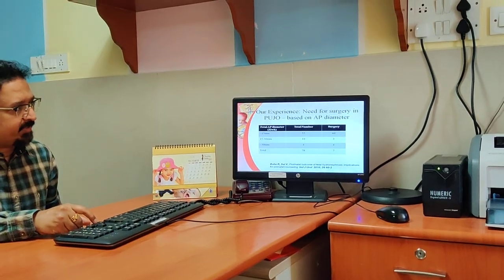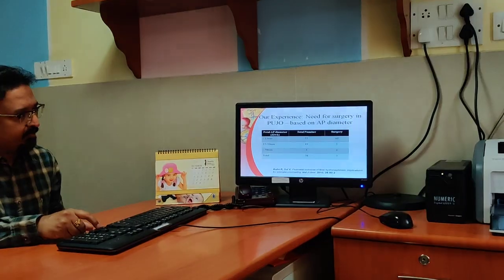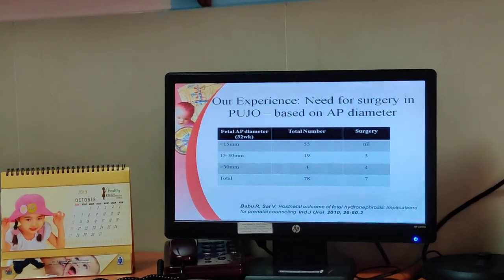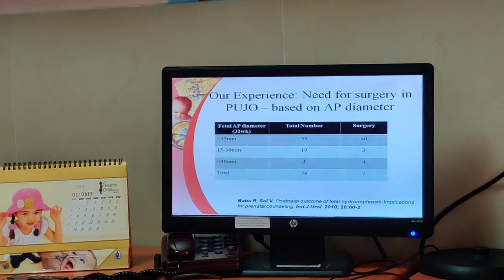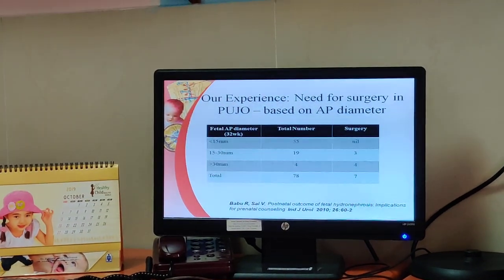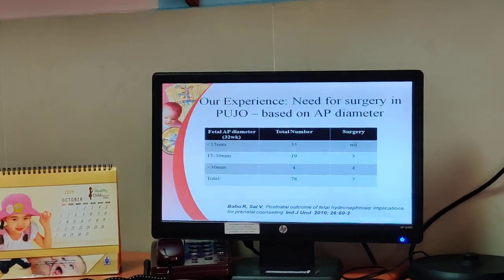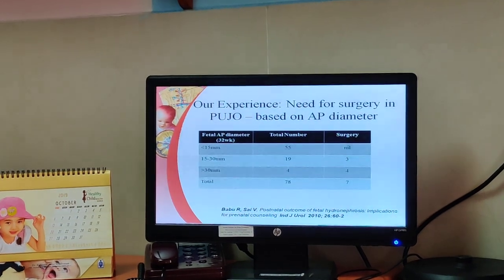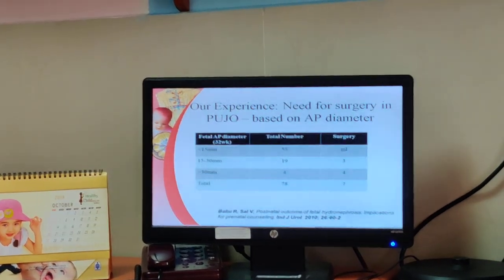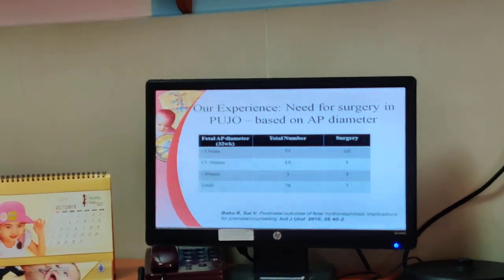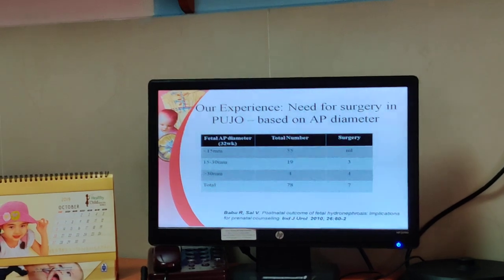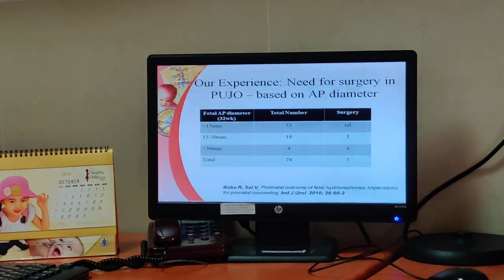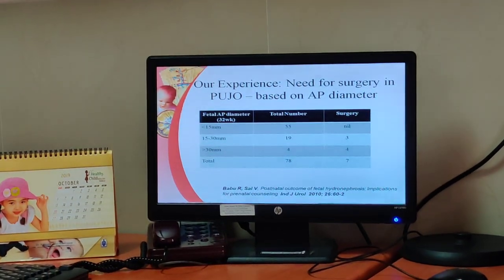In our experience, we studied the need for surgery in PUJO based on AP diameter and published in the Indian Journal of Urology in 2010. When the AP diameter on third trimester ultrasound was more than 30 mm, all of them required pyeloplasty, whereas if it was less than 15 mm, none of them required surgery.